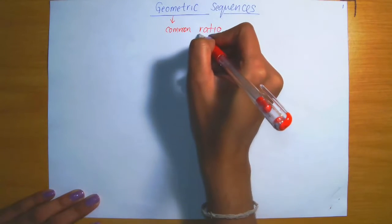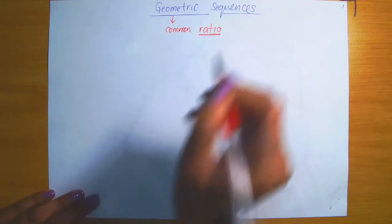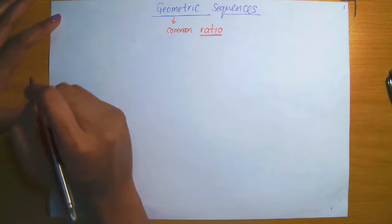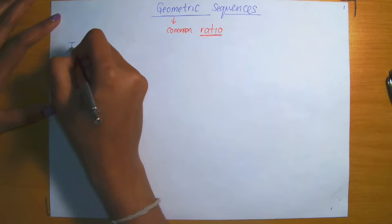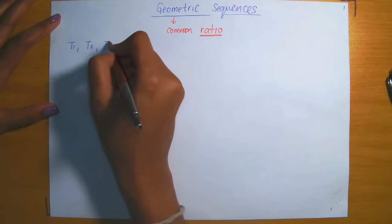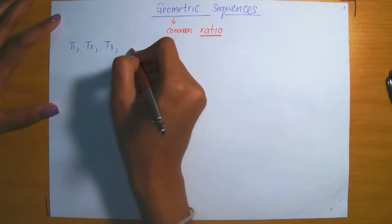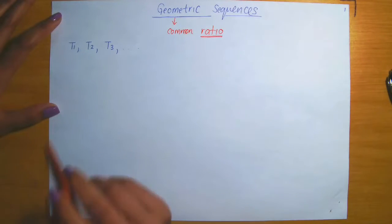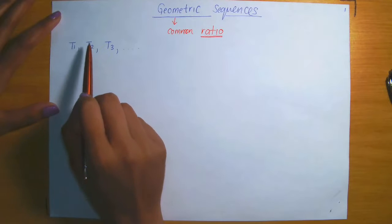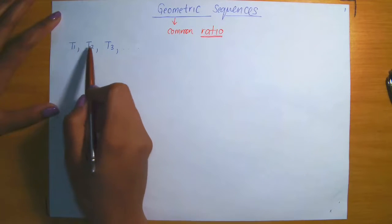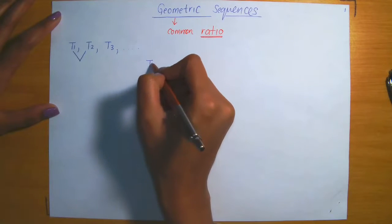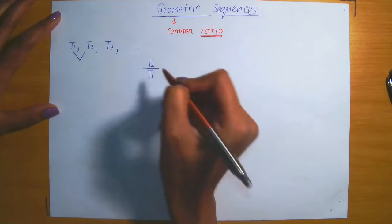Firstly, let's inspect what we mean when we say ratio. Let's consider an arbitrary sequence. Suppose I've given you terms t1, t2, and t3 — the first three terms in a sequence. Then by a ratio between consecutive terms, if you consider the first two terms, they are consecutive. We mean the following: t2 divided by t1. That is the ratio between the first pair of terms.